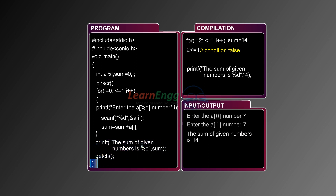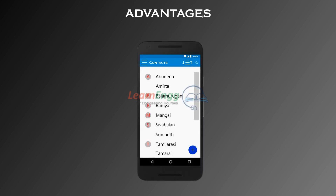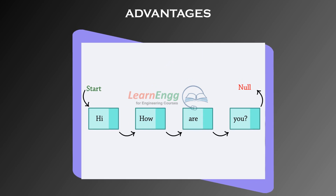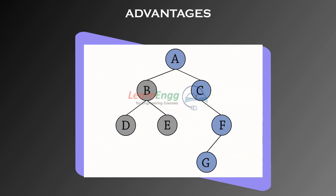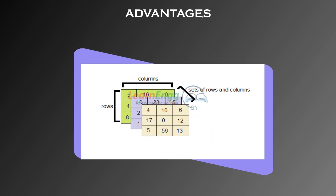The getch() function is used to exit the console screen. Advantages: Arrays are used to represent multiple data items of the same type using a single name. They can be used to implement other data structures like linked lists, stacks, queues, trees, and graphs. Two-dimensional arrays are used to represent matrices.